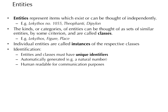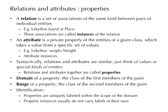Now let's turn to relations and attributes. A relation is a set of associations of the same kind between pairs of individual entities. For instance, 'Lekithos found at place' is a relation — it is a set comprising pairs where the first member is a Lekithos and the second is a place, meaning the Lekithos was found at that place. We can have a listing of such Lekithos-found-at-places pairs, and this listing is called a relation. These pairs are called instances of the relation.